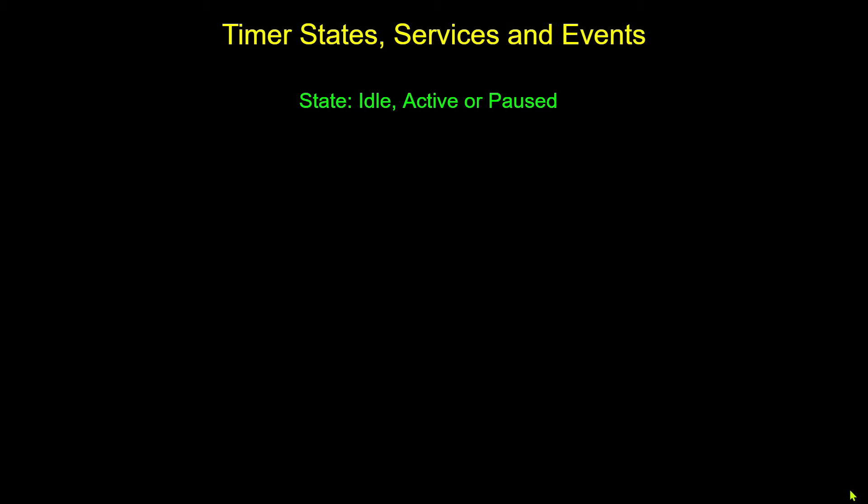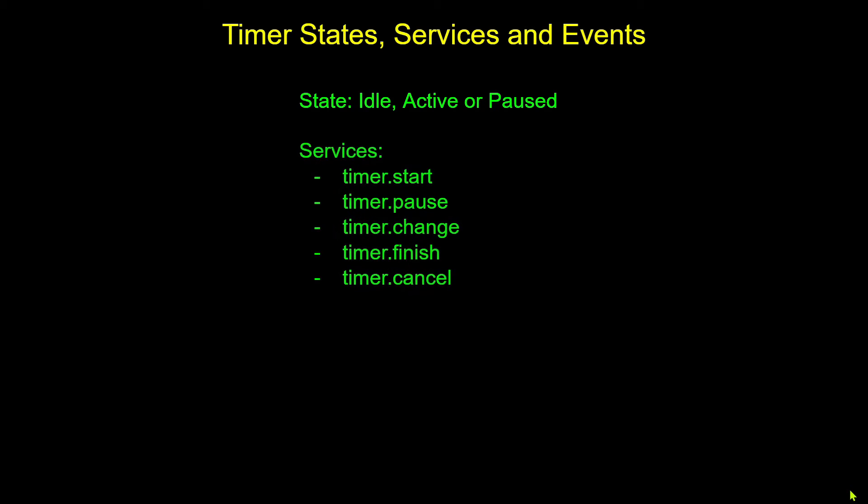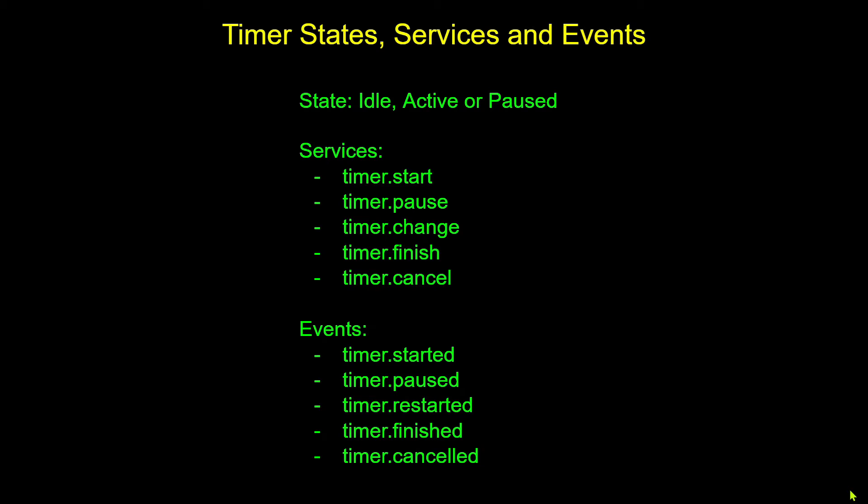Let's take a look at the states, services, and events related to timers. A timer has three states: idle, active, or paused — active means it's running, idle means it's not, or it's been paused. In terms of services, we can call start, pause, change (to add or remove time from an actively running timer), force the timer to finish early, or cancel the timer. The difference between finish and cancel relates to available events — an event fires anytime a timer is started, paused, restarted, finished, or canceled, allowing us to differentiate between a timer that finished versus one that was canceled.